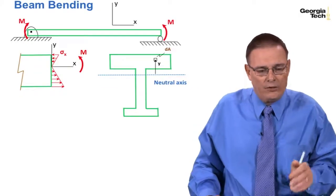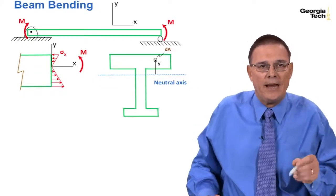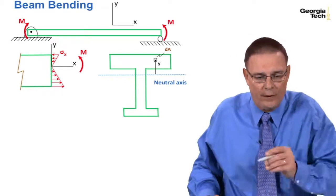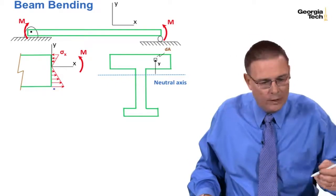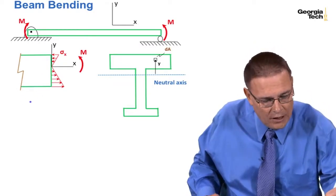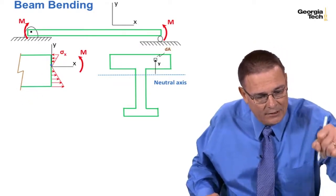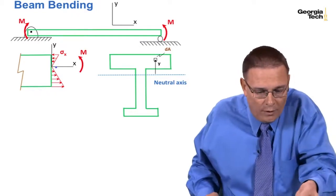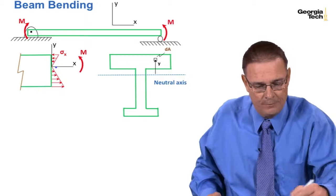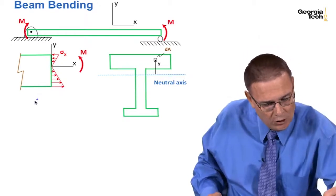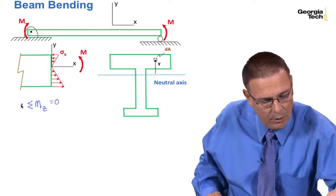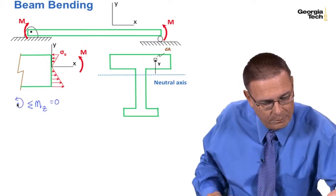Last time we summed forces in the x direction and came up with the first moment of area being set equal to zero to find the neutral axis. Now what I want to do is sum moments about z. The z-axis is coming in and out — left and right on this diagram on the right.